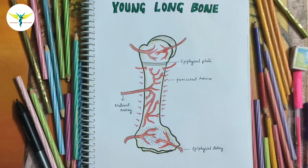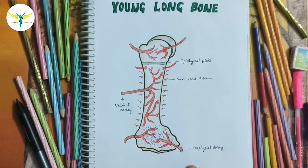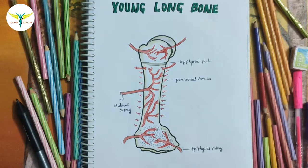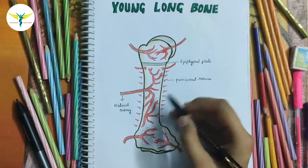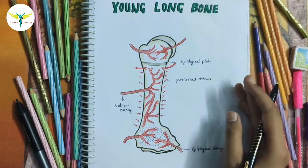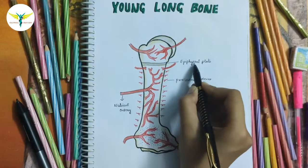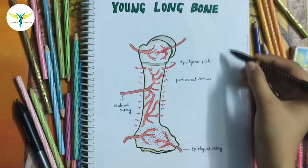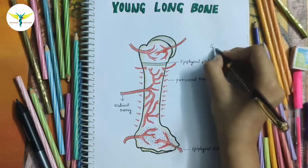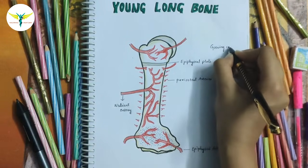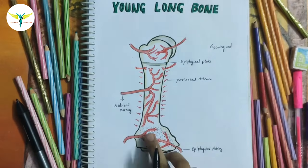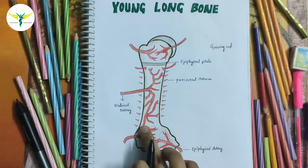Hello guys, welcome back. In this video, let's learn about the blood supply of a young long bone. The arterial supply of a long bone is derived from many arterial sources because it needs more nourishment. These are the epiphyseal plates — the growing ends of the bone.